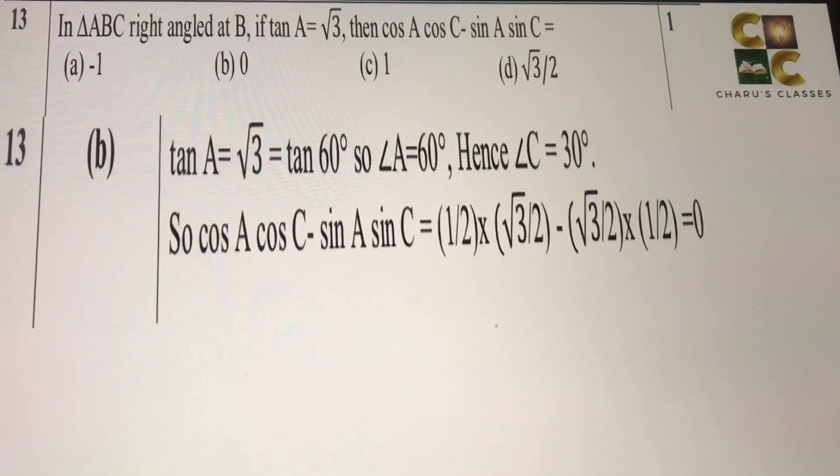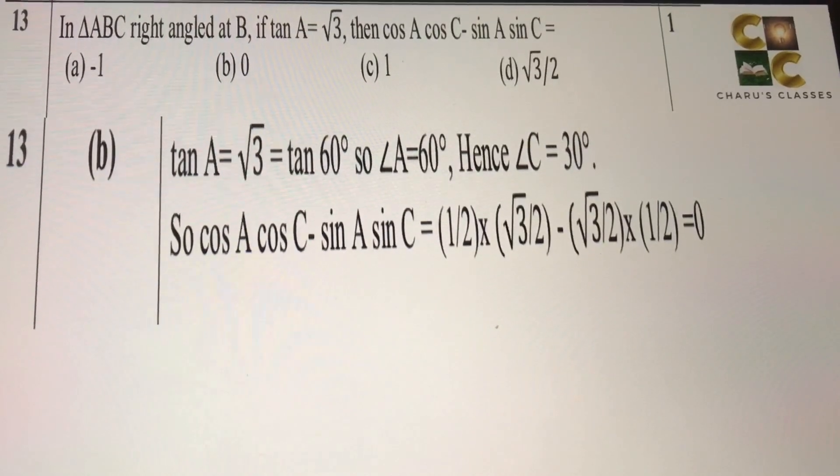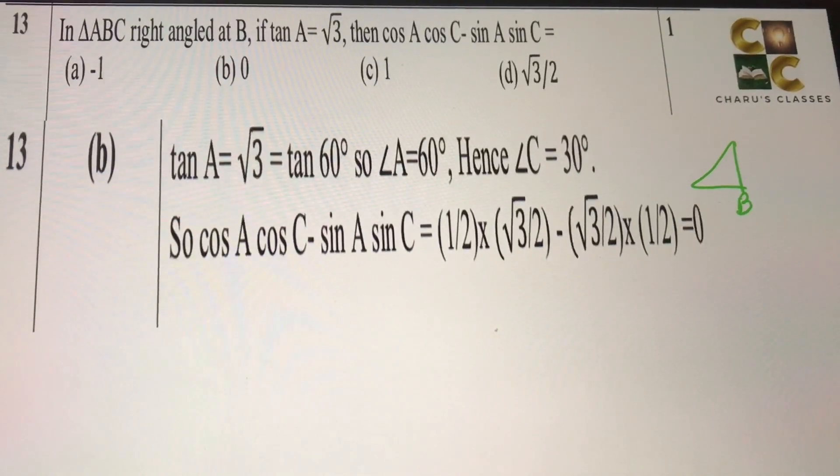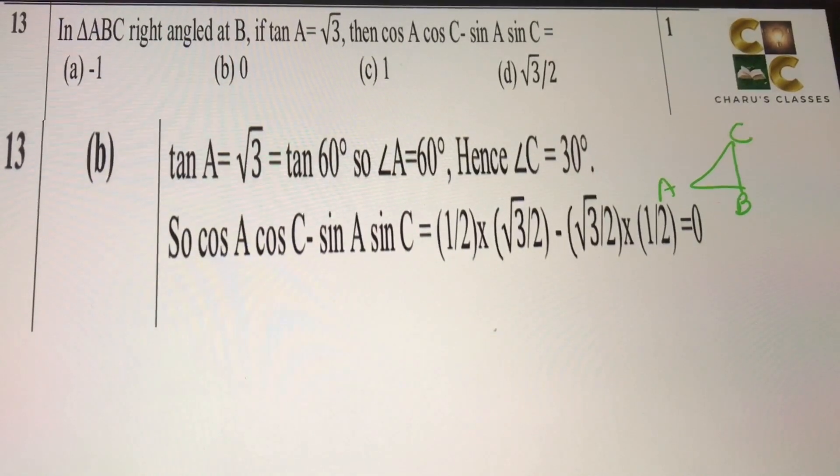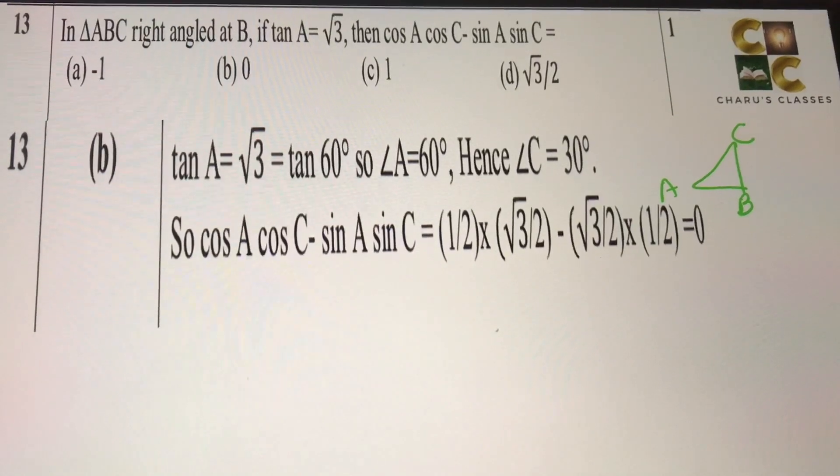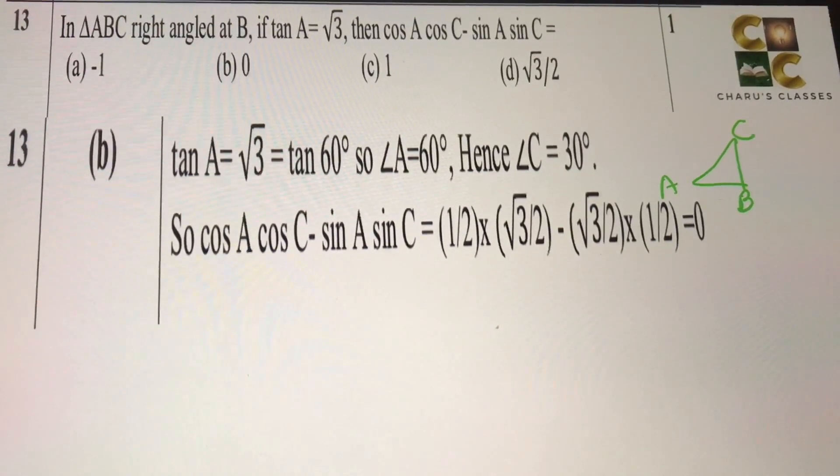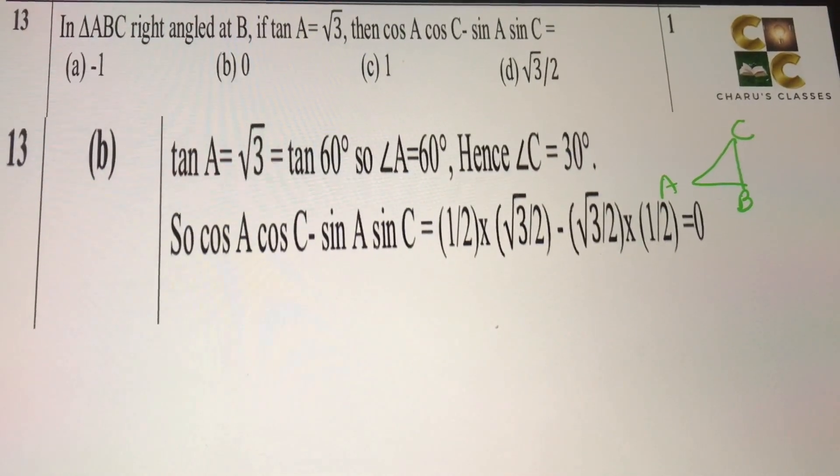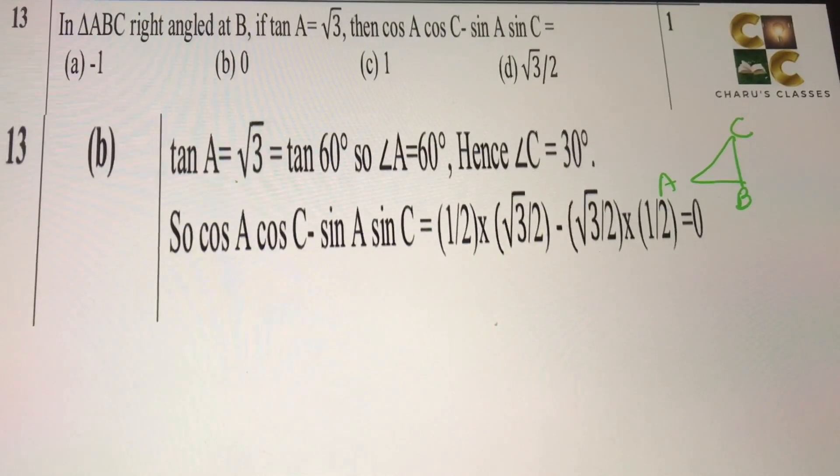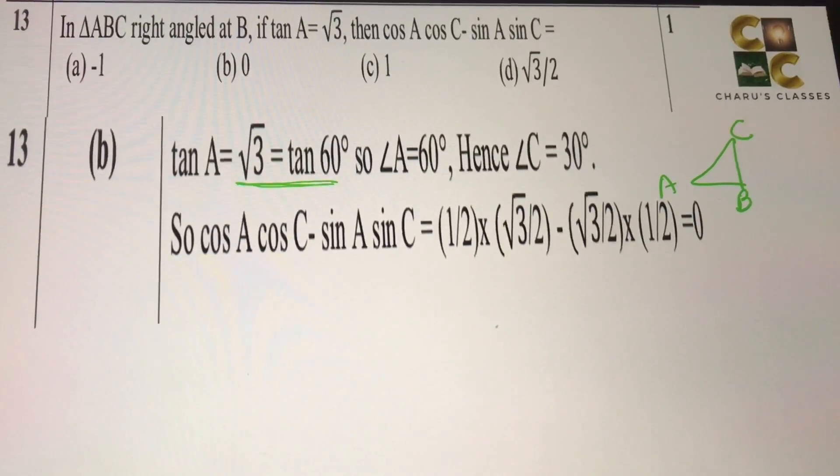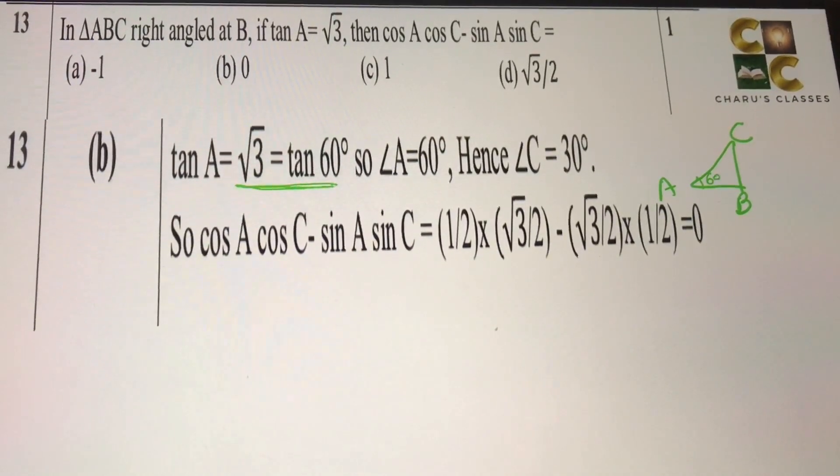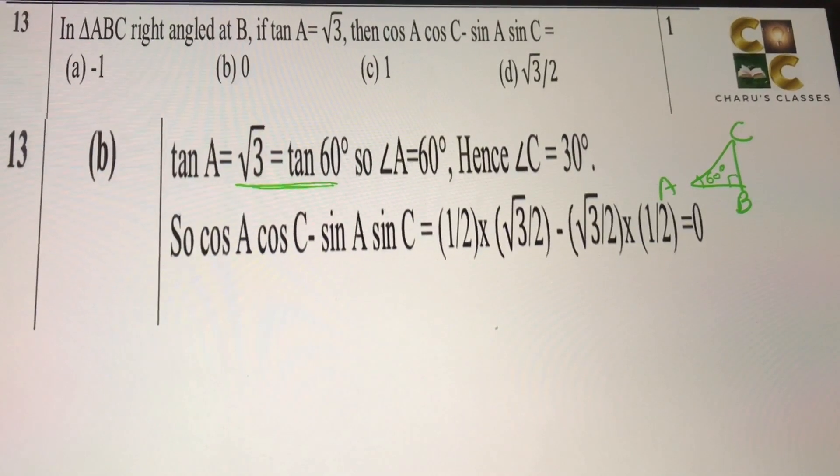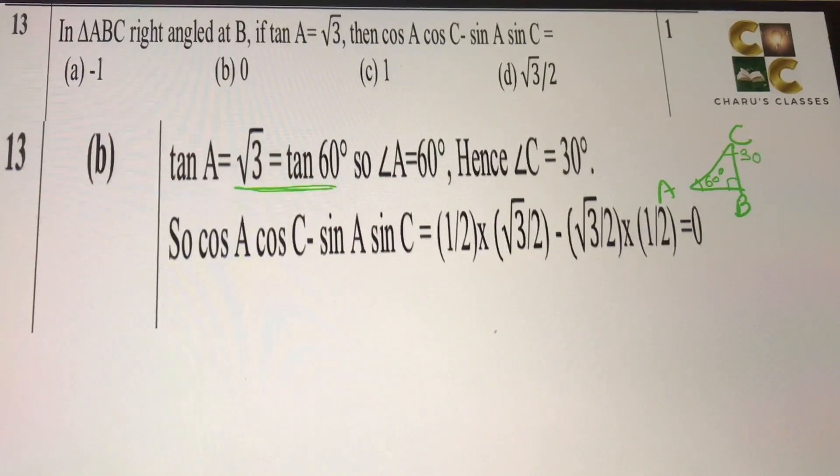Thirteenth question: In triangle ABC, right angled at B. If tan A is equal to root 3, then the value of cos A cos C minus sin A sin C is equal to. So if tan A is equal to root 3, we know that tan 60 degree is root 3, which gives us angle A as 60 degrees. So this is 60 degrees. Using the angle sum property, this is 90 degrees, it is 60. So angle C will be 30 degrees.